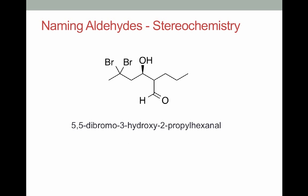Now what if we actually have stereochemistry designated, because this alcohol is in fact a chiral center, as is the carbon bearing the propyl group. The propyl group — we didn't designate any configuration there, so we don't have to worry about specifying that one. But the alcohol — we did designate stereochemistry, so we need to specify its configuration in the name. Based on the Cahn-Ingold-Prelog rules for prioritization, let's draw in our hydrogen, which is pointed back. Hydrogen is our priority four group, oxygen is priority one.